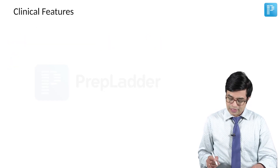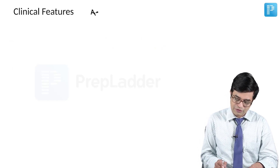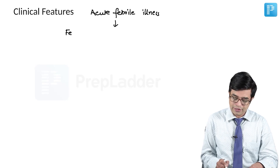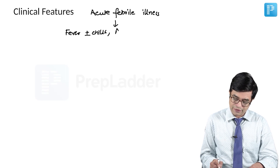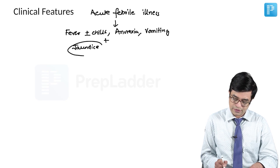What are the clinical features? After the incubation period is over, it is an acute febrile illness. There will be a prodromal period with fever with or without chills. These patients will have anorexia and vomiting. Along with that, they will develop clinical jaundice — icterus will appear.